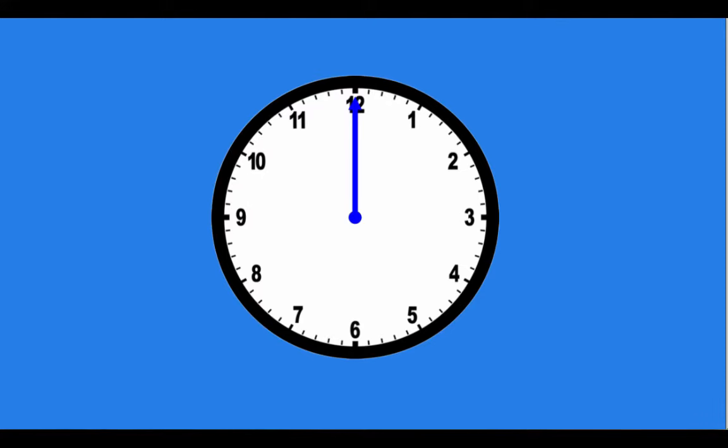Our minute hand needs to be able to point to the minutes that are ticking around the outside of our clock. So as you can see, these little dashes around the outside of the clock, they are our minutes.